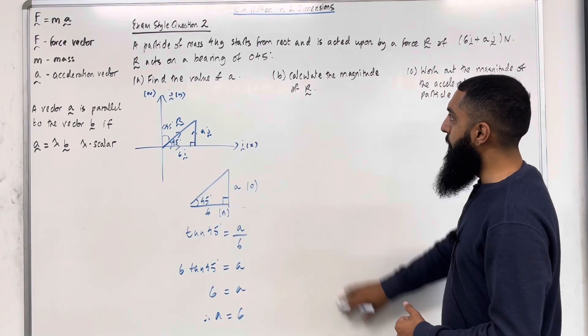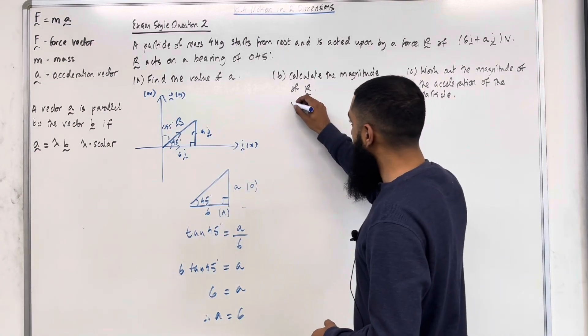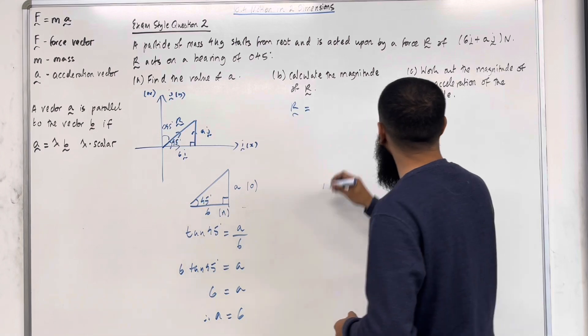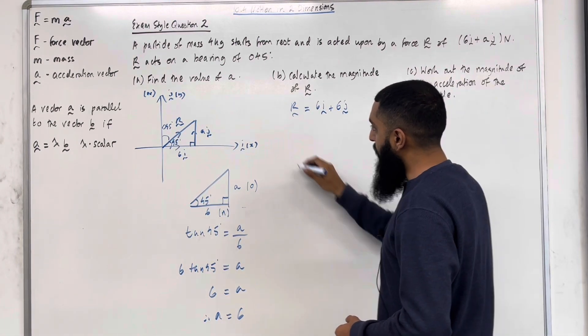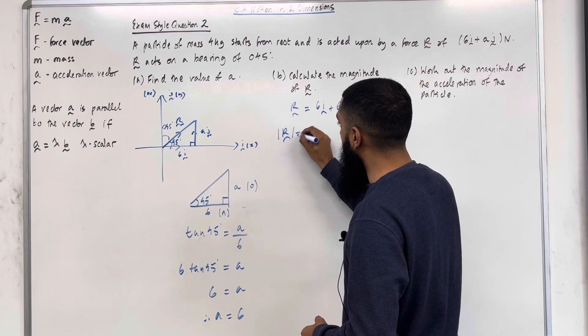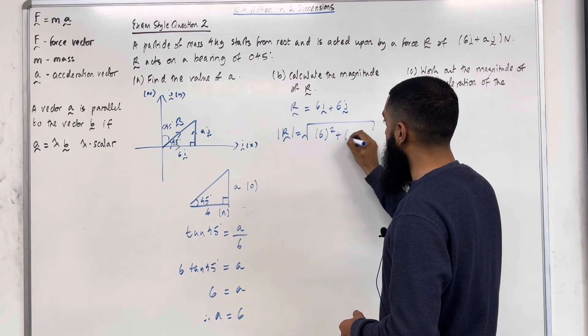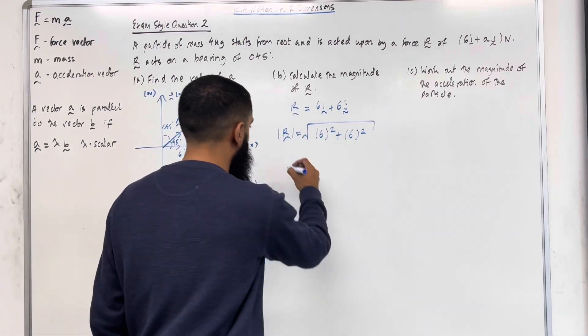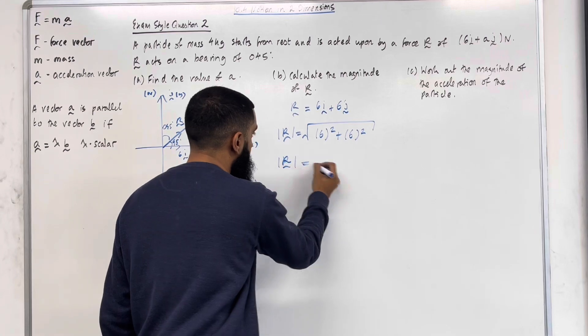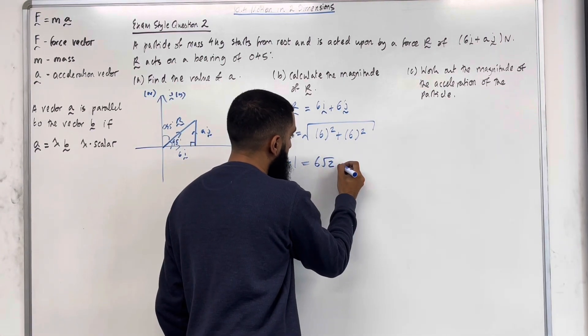This completes part A of exam style question 2. Let's move on to part B. Calculate the magnitude of the force R. The force R equals 6i plus 6j. To work out the magnitude of the force R, we simply do square root 6 squared plus 6 squared. The magnitude of the force R equals 6 square root 2 newtons.